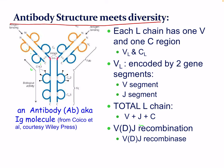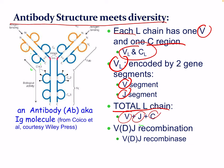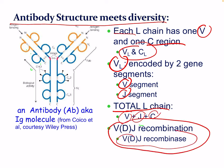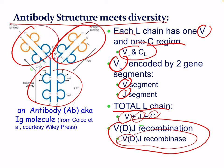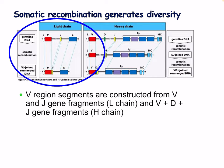Each light chain has one variable and one constant region, denoted VL and CL. VL is encoded by two gene segments, V and J. The total light chain involves V, J, and C, assembled through VJ recombination by the VDJ recombinase enzyme. Each heavy chain has one variable region and three constant domains, denoted VH and CH. VH is encoded by three gene segments — V, D, and J — and the total heavy chain involves V, D, J, and C.